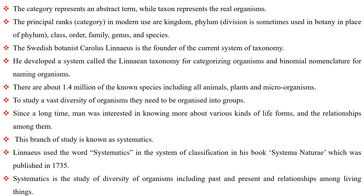The category represents an abstract term, while taxon represents the real organism. The principal ranks in modern use are kingdom, phylum (division is sometimes used in botany in place of phylum), class, order, family, genus, and species. The Swedish botanist Carolus Linnaeus is the founder of the current system of taxonomy. He developed a system called Linnaean taxonomy for categorizing organisms and binomial nomenclature for naming organisms.